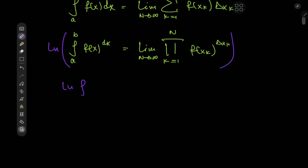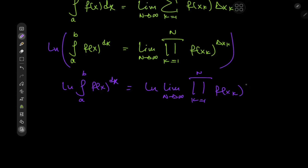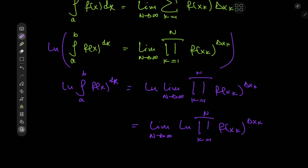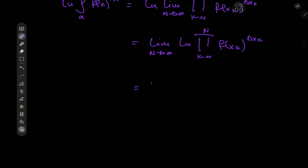On the left we have the logarithm of the integral from a to b of f(x) to the dx, equal to the logarithm of the limit as n tends to infinity of the product over k from 1 to n of f(x_k) to the delta x_k. Provided that the product is non-zero, we can switch the order of the limit and logarithm operators, giving us the limit as n tends to infinity of the logarithm of the product over k from 1 to n of f(x_k) to the delta x_k. This product now turns into a sum: the limit as n tends to infinity of the sum over k from 1 to n of log f(x_k) times delta x_k.